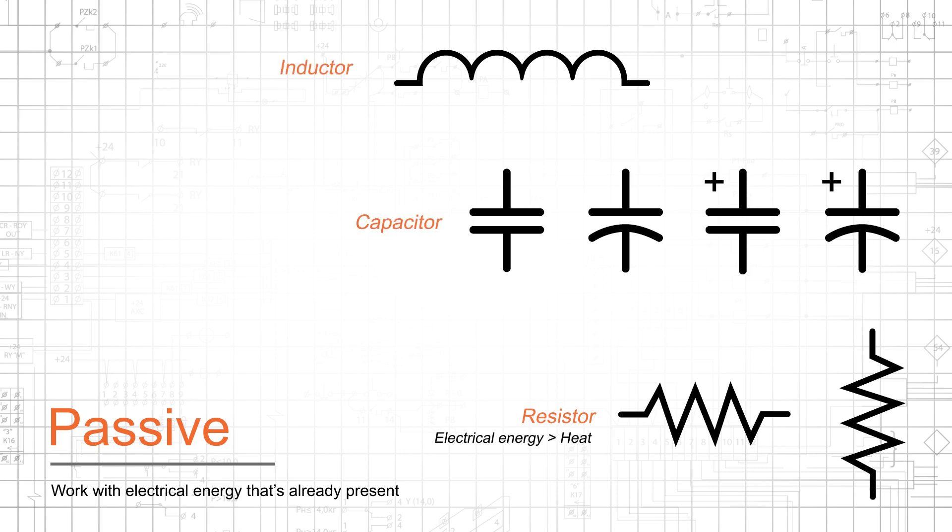Resistors convert electrical energy into heat. Capacitors store electrical energy in an electric field, and inductors store electrical energy in a magnetic field. They can influence electrical signals by converting energy from one form to another, but they cannot increase the power of a signal by injecting energy supplied by a source, such as a battery.